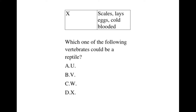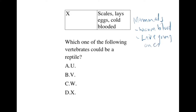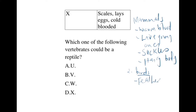When you look at vertebrates, they can be divided into five groups. We have mammals, which are warm-blooded and give birth to live young ones. Then we have birds, which have feathers, lay eggs, and are warm-blooded.